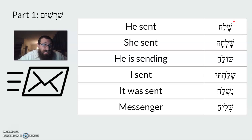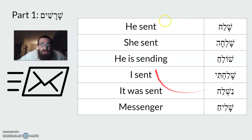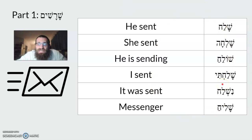For example, with the root shalach: 'shalach' means he sent — just the shoresh, past tense. 'Shalcha' means she sent. 'Sholech' means he is sending. 'Shalachti' means I sent. 'Nishlach' means it was sent. 'Shaliach' means a messenger. Those are all the same shoresh but with different specific meanings based on conjugation — the vowels and extra letters added.